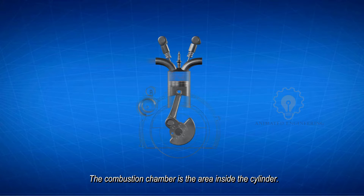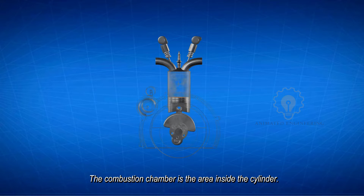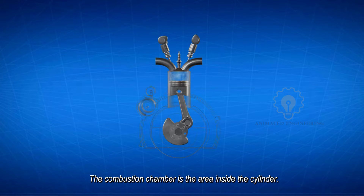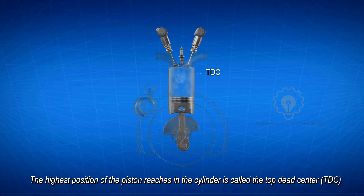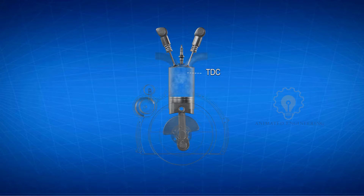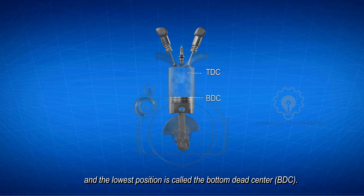The combustion chamber is the area inside the cylinder. The highest position the piston reaches in the cylinder is called the top dead center, and the lowest position is called the bottom dead center.